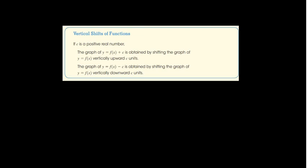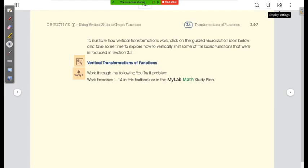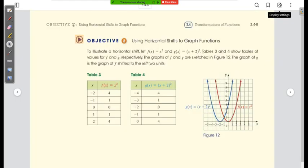Here is the rigorous definition: if c is a positive real number, and notice c is located at the end of f(x), then the graph of y = f(x) + c is obtained by shifting the graph of y = f(x) vertically upward. So if it's a plus, we go upward; if it's a minus, we go downward. Plus up, minus down — that's the whole premise of vertical shifts. Pretty easy. We just did one in example one.